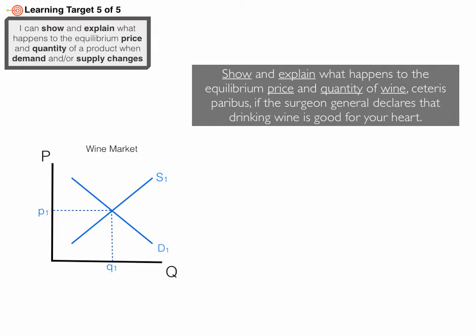The problem says show and explain. Show means graph. Explain means answer the question and give a reason or explanation for the answer. Here, the Surgeon General declares that drinking wine is good for your heart, so demand is going to change. Ask yourself who's going to react most directly or first. The consumers of wine are going to react and want to perhaps buy and drink more wine. So the demand for wine has gone up — a shift of the entire curve. The price of wine hasn't changed; there's some reason other than price that consumers now want to buy more wine. That's an increase in demand, symbolized with a D and an up arrow.